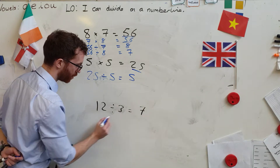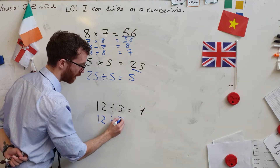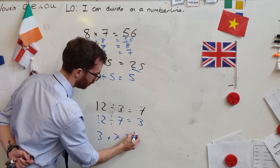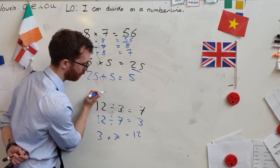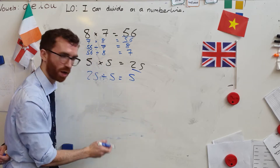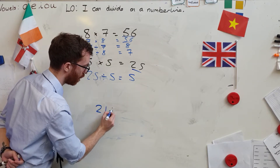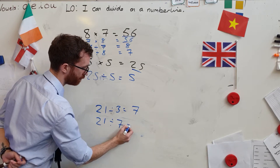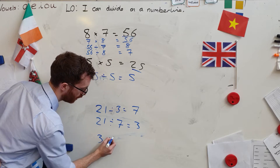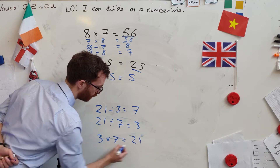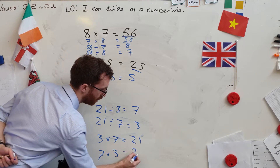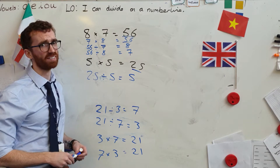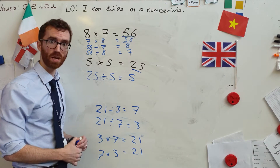Let's check the last one: 21 divided by three equals seven, so 21 divided by seven equals three, three times seven equals 21, and seven times three equals 21. I completely put the wrong number up at first — I hope you were screaming at home! It wasn't 12, it was 21. I really hope you spotted the mistake. We all make mistakes — it's about spotting them and correcting as you go through.